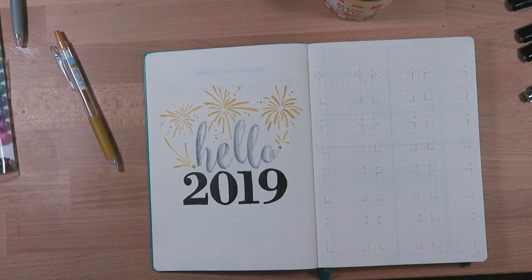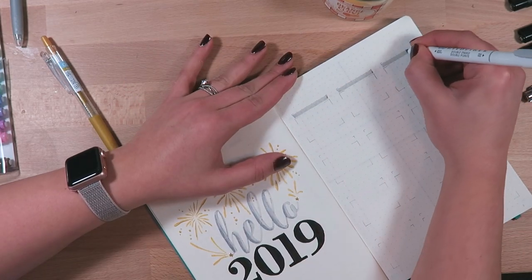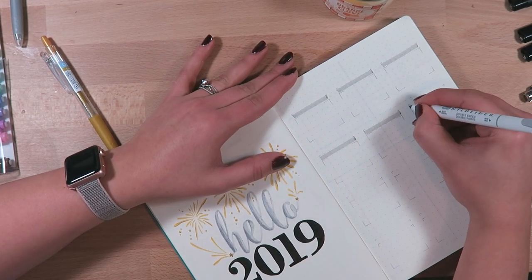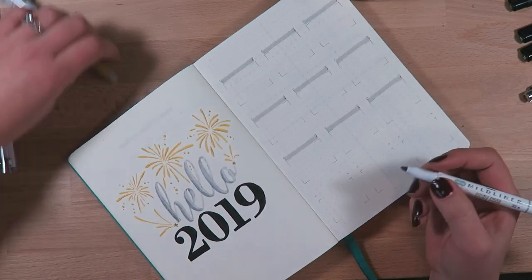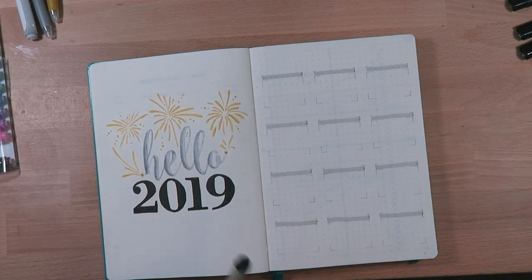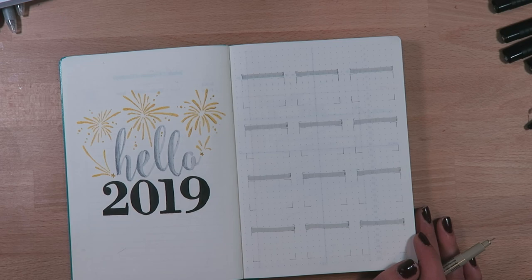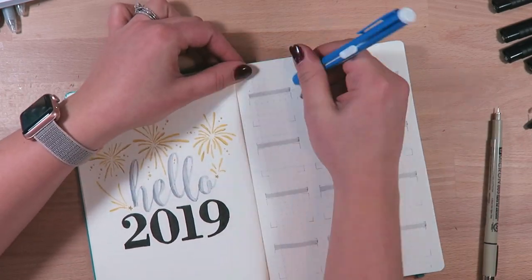For the page next to it, for my year in review, I think this just goes really well with the hello 2019 for the new year. I used the Midliner gray pen to just make a bar across where I'll put Monday, Tuesday, Wednesday, Thursday, Friday, Saturday, Sunday on there for each of the months.